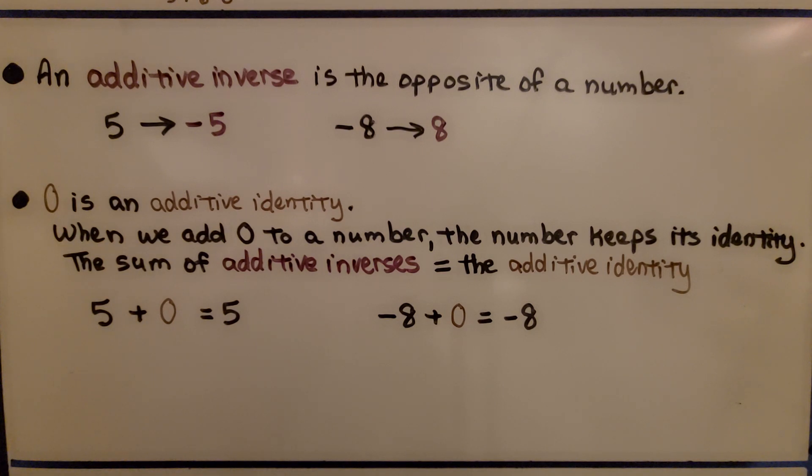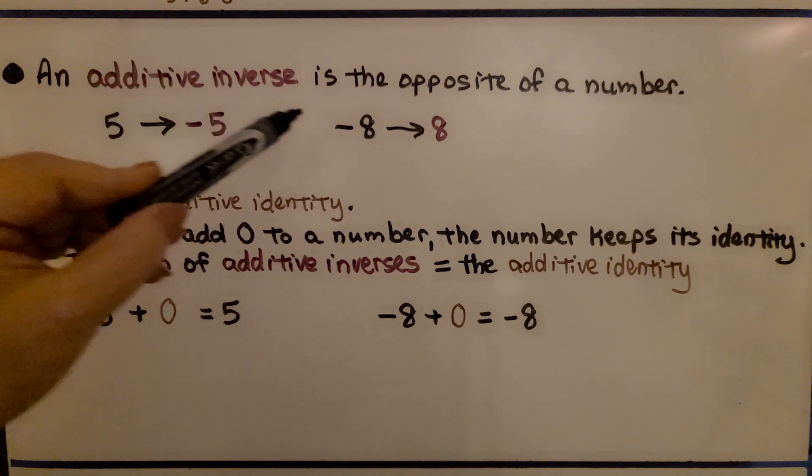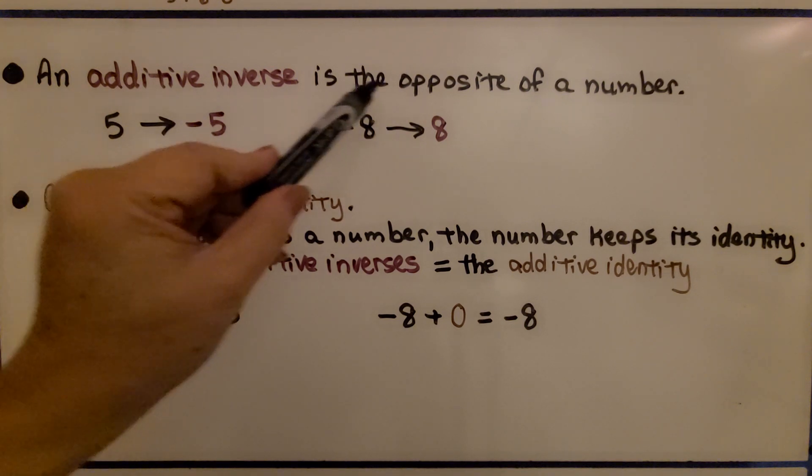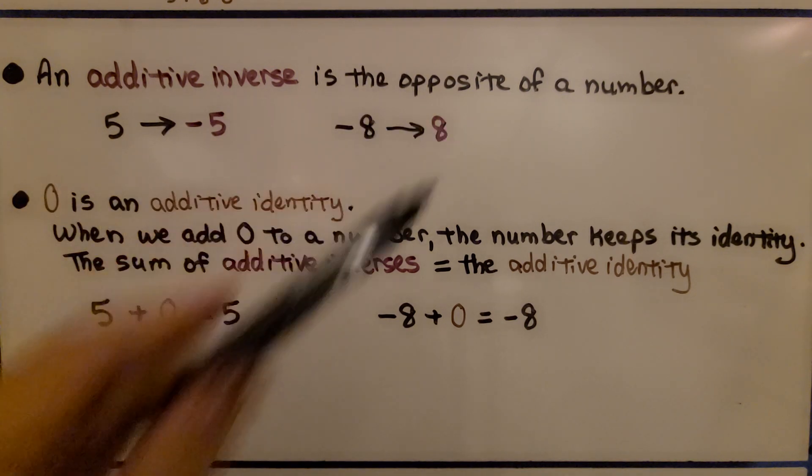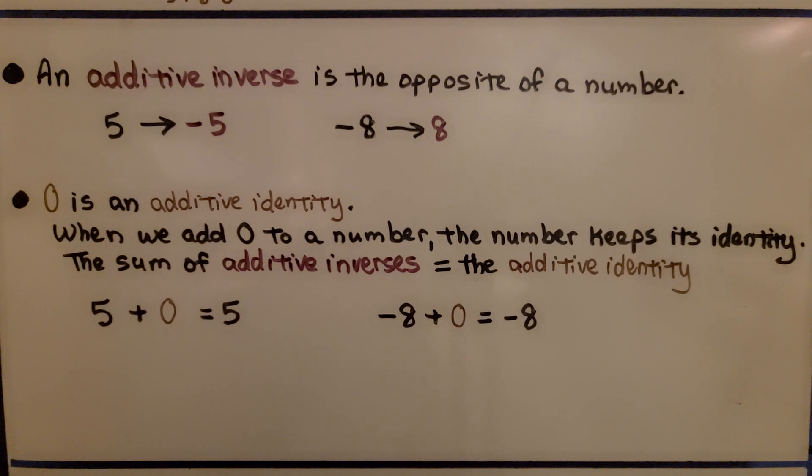So, I wanted to clarify something before we move on to the next lesson. The difference between an additive inverse and an additive identity. An additive inverse is the opposite of a number across 0 on a number line. So, if we have a positive 5, its additive inverse is a negative 5. It's its opposite. If we have a negative 8, its opposite, its additive inverse would be a positive 8.